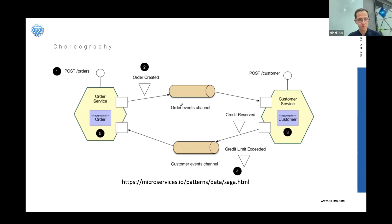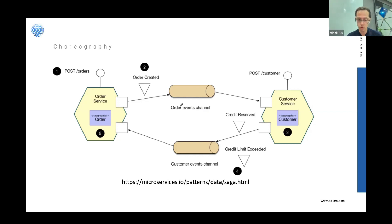In the choreography pattern, those are mostly event-driven architectures where each component reacts to events. For a simple example of creating an order: the order service says 'I created an order' and emits an event. Another service decides whether there's enough credit and emits a 'credit reserved' or 'credit failed' event. The order service subscribes and listens to those events to decide whether the order was successful or a failure. Each service decides what to do based on the events it receives — nobody tells them what to do.